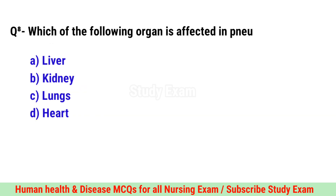Question No. 8. Which of the following organ is affected in pneumonia? Correct option is C. Lungs.